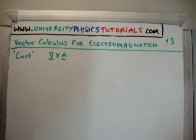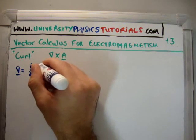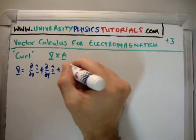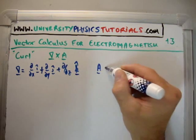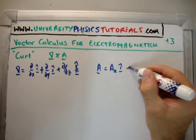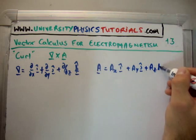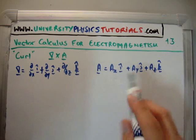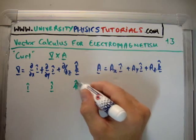So let's say we have the NABLA operator, well that's going to be del/del x i hat plus del/del y j hat plus del/del z in the k hat direction. And A has three components: it's going to be A_x in the i hat direction plus A_y in the j hat direction plus A_z in the k hat direction.